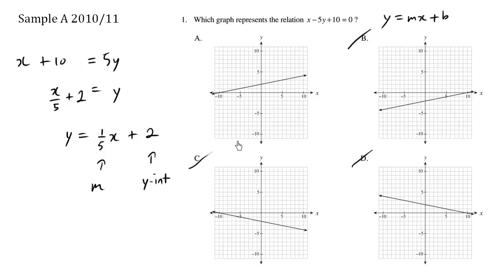So cancel these ones, this, this, and just to confirm our y-intercept indeed is 2. One, two. So choice A is the correct answer.